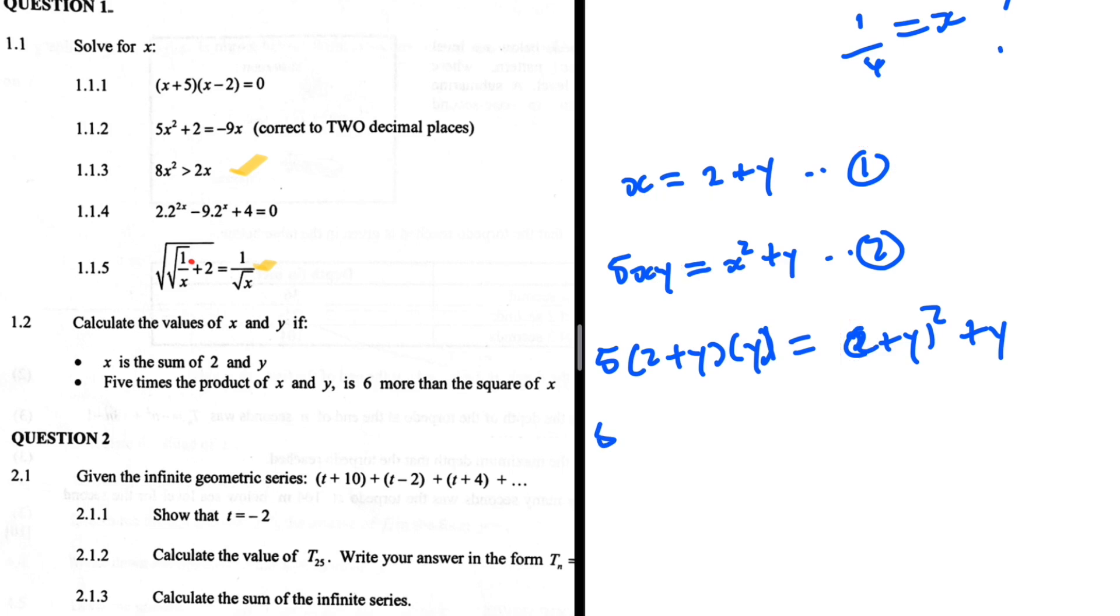Let's get on. We have 5 times 2y, that's 10y, plus 5y squared. This equals 4 plus 4y plus y squared plus 6. So we get 10y plus 5y squared equals y squared plus 5y plus 4.